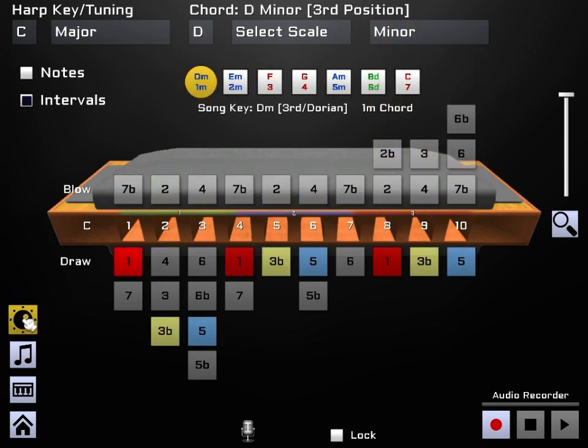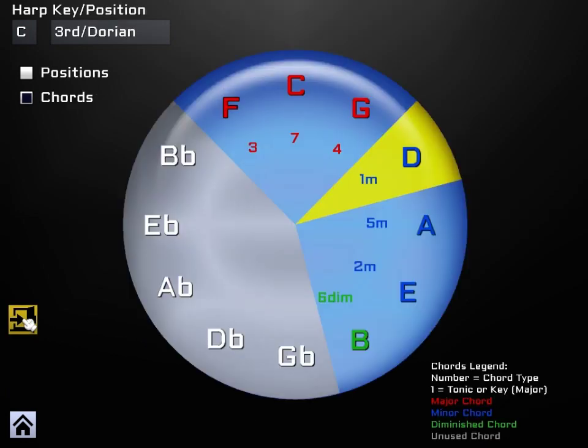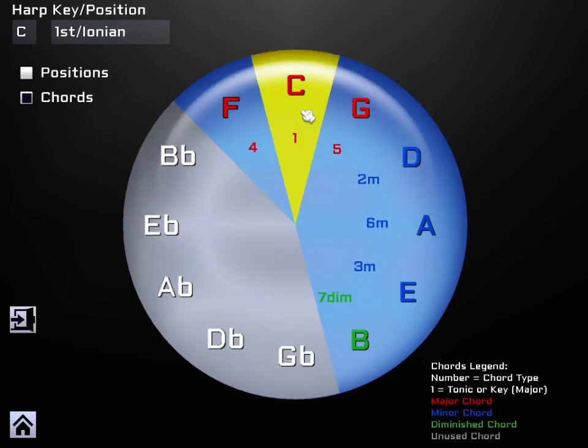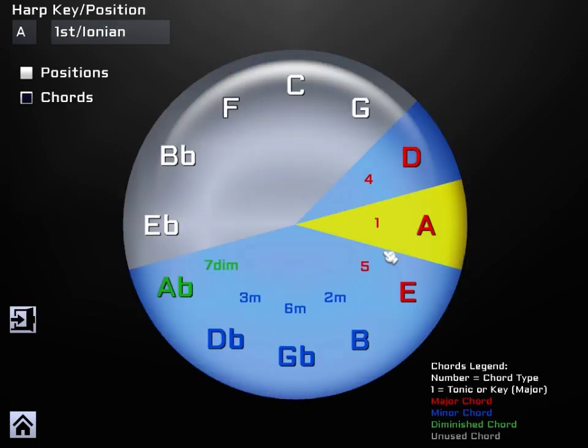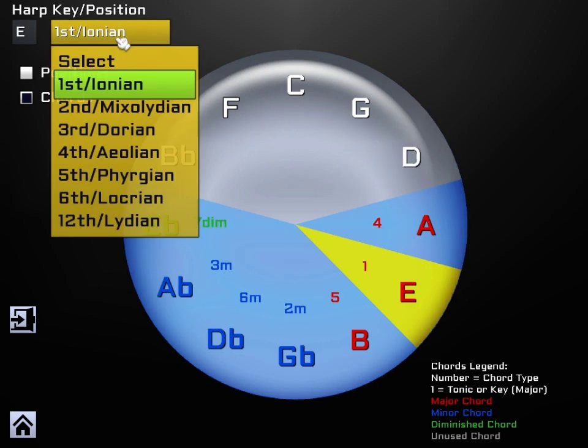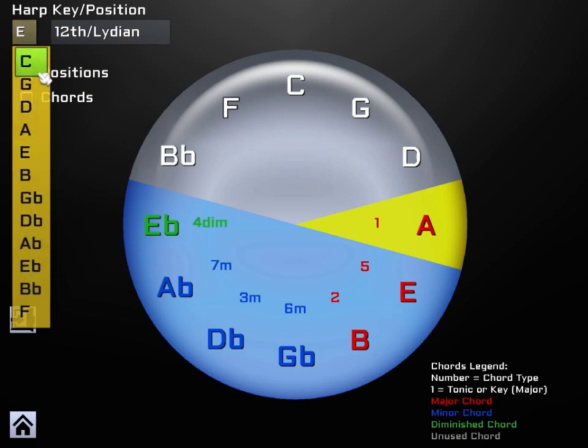So, that's how the circle of fifths integrates into the tuning dojo. By clicking on any of these, that sets the main key, and then you select the position through any one of these here.